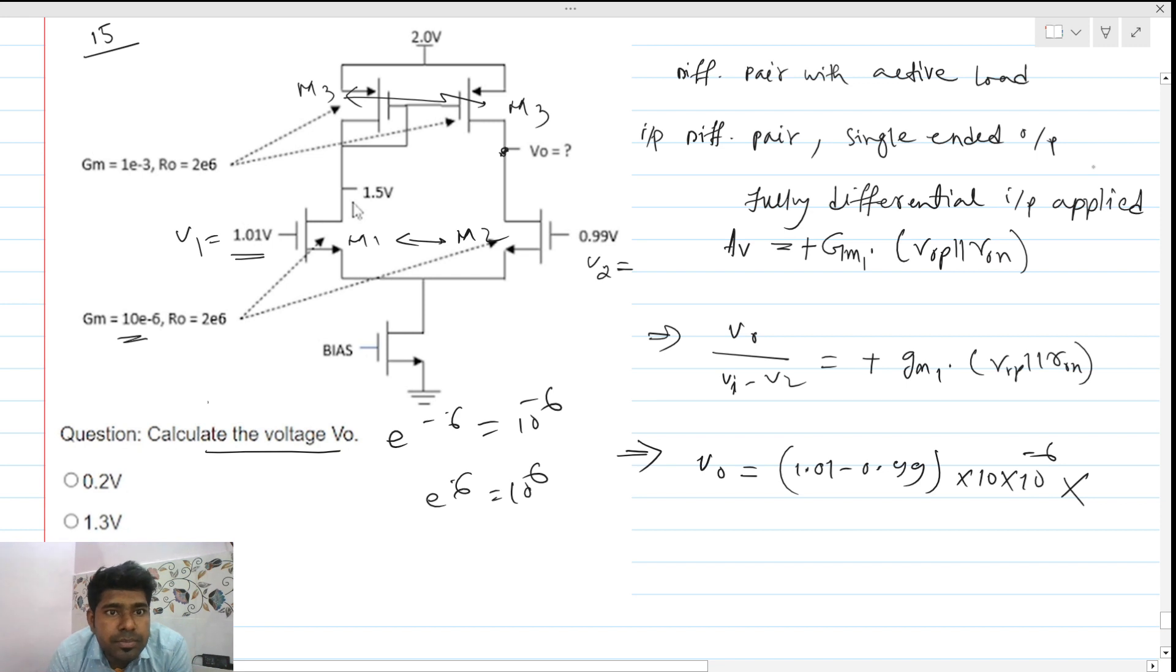Ro p - the p means this is a p mos, and n means this is an n mos. So ro p is 2 times 10 power 6 parallel with r on, which is the same, 2 times 10 power 6. If the same quantities are in parallel, we have half of this, so this will be 1 times 10 power 6.